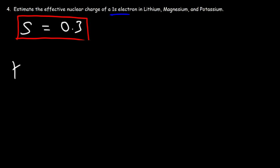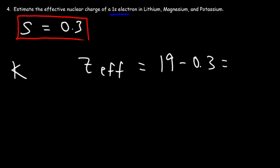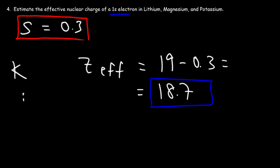Now let's look at potassium. Potassium has an atomic number of 19, so 19 minus 0.3 gives us an estimation of 18.7 for the effective nuclear charge of the 1s electron. The actual value based on Wikipedia is 18.49 for potassium. As you can see, the deviation increases when dealing with heavier elements. Now you know how to use Slater's rule to estimate the effective nuclear charge of an electron in an element. Thanks for watching.